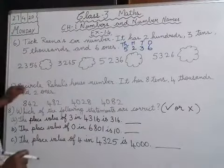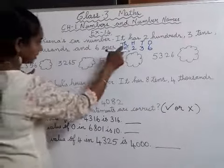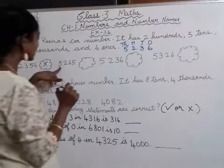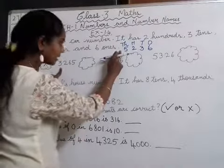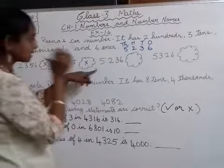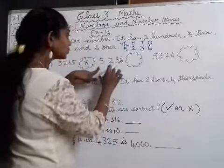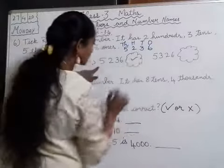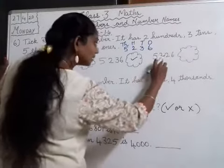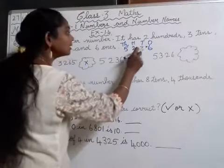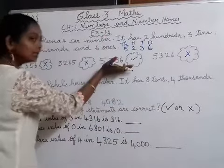Now we find 5236 in the options. First option 2356 — not matching. Second option 3265 — not matching. Third option 5236 — matches! Fourth option 5326 — does not match 5236. So the correct answer is 5236.